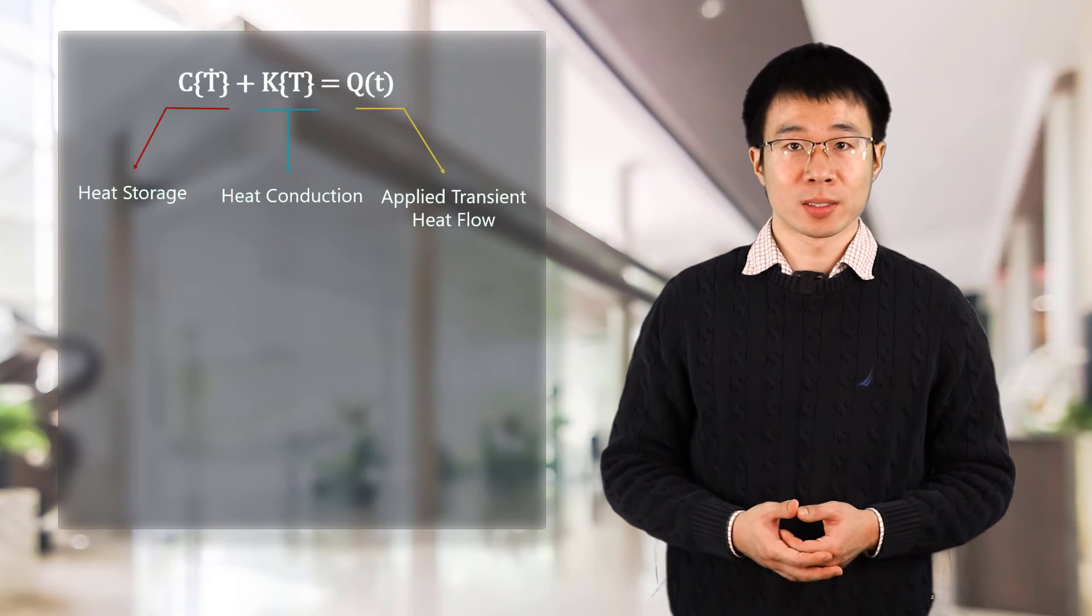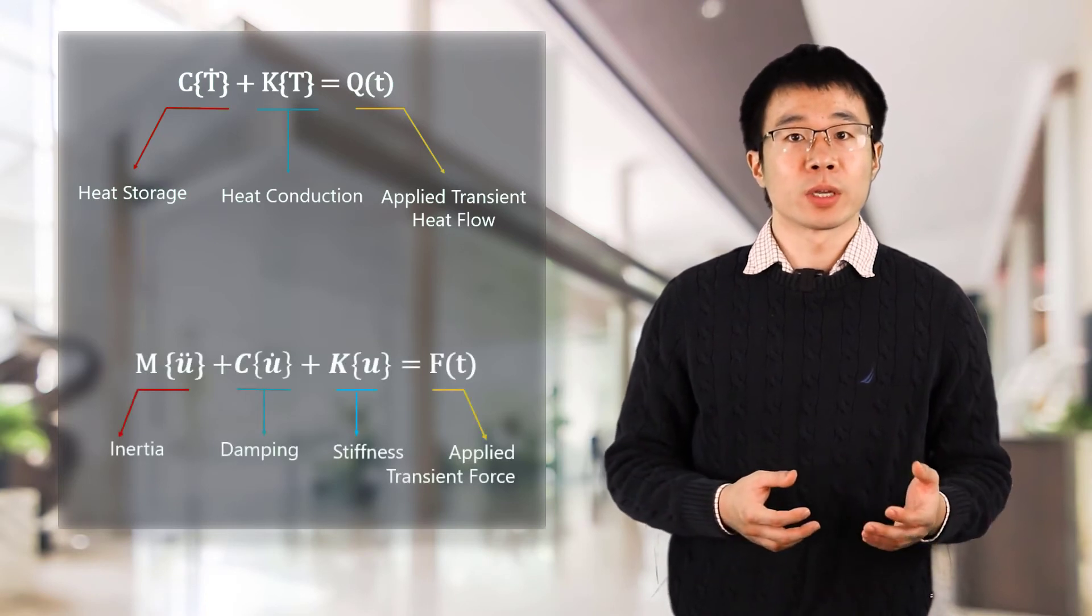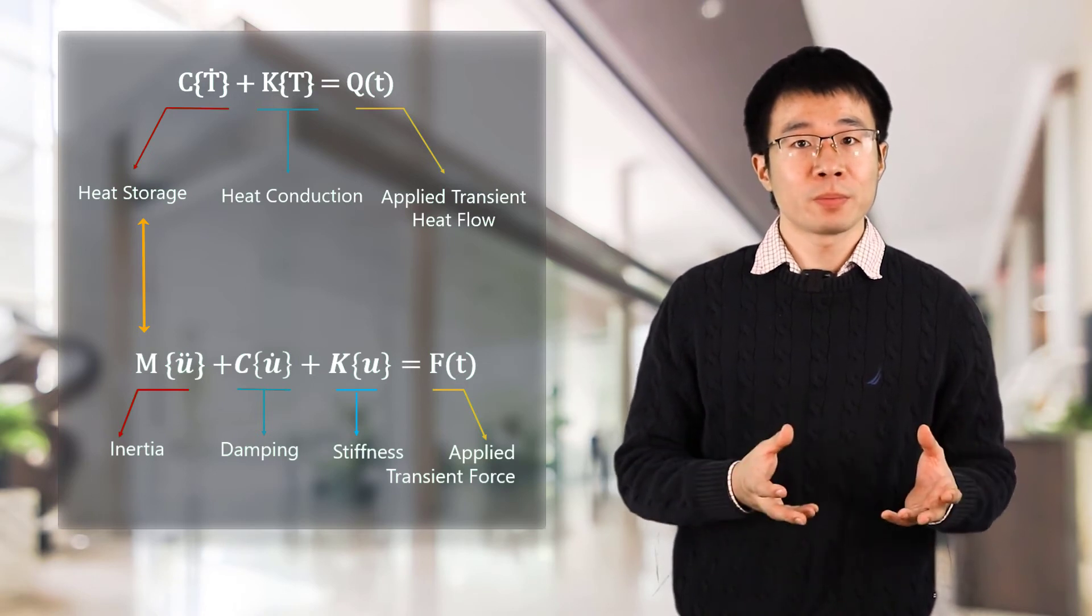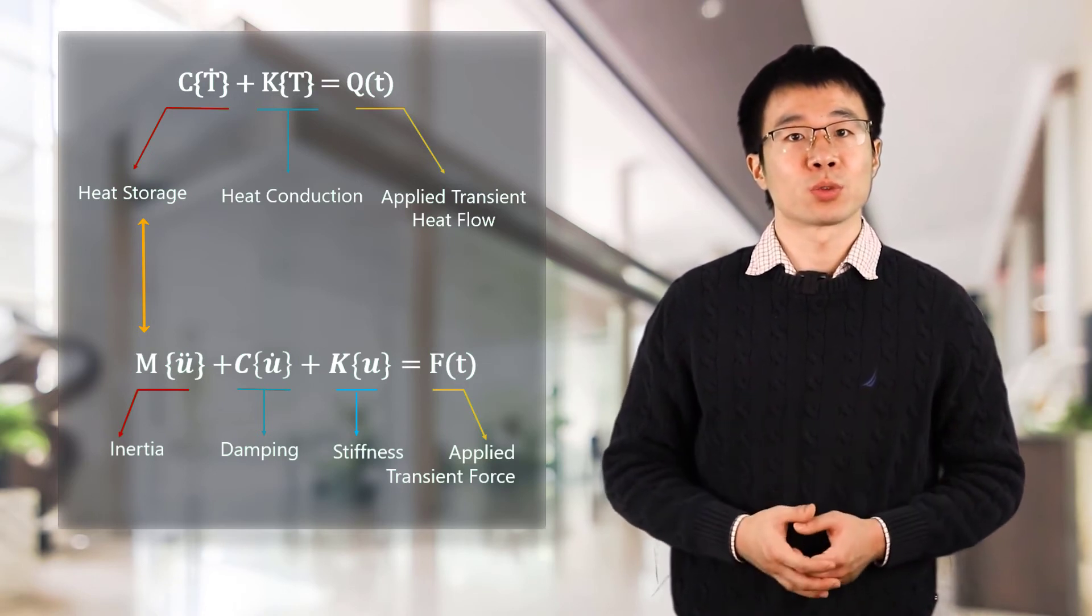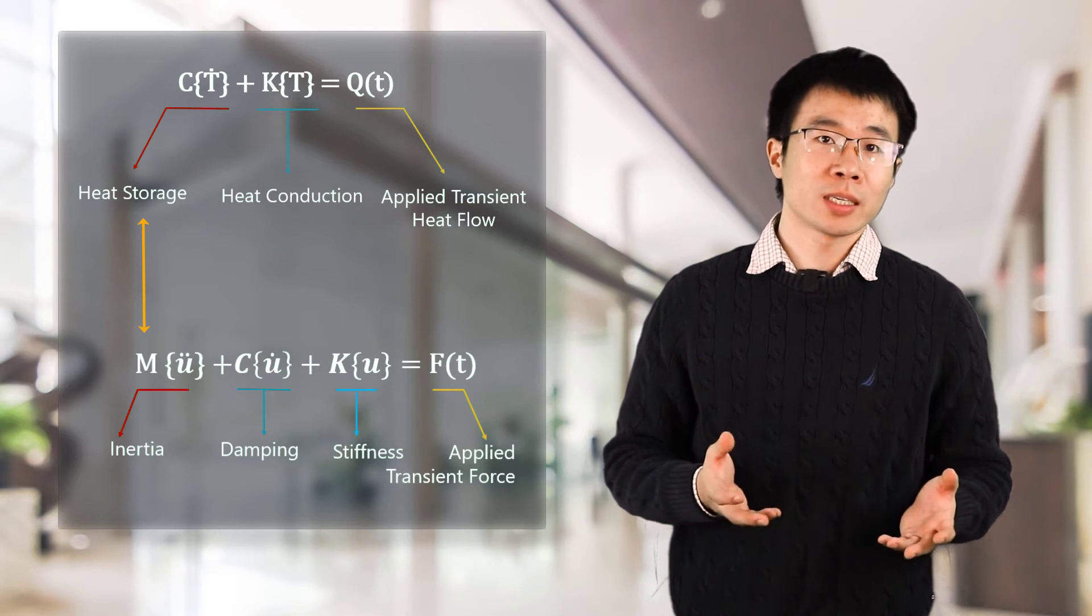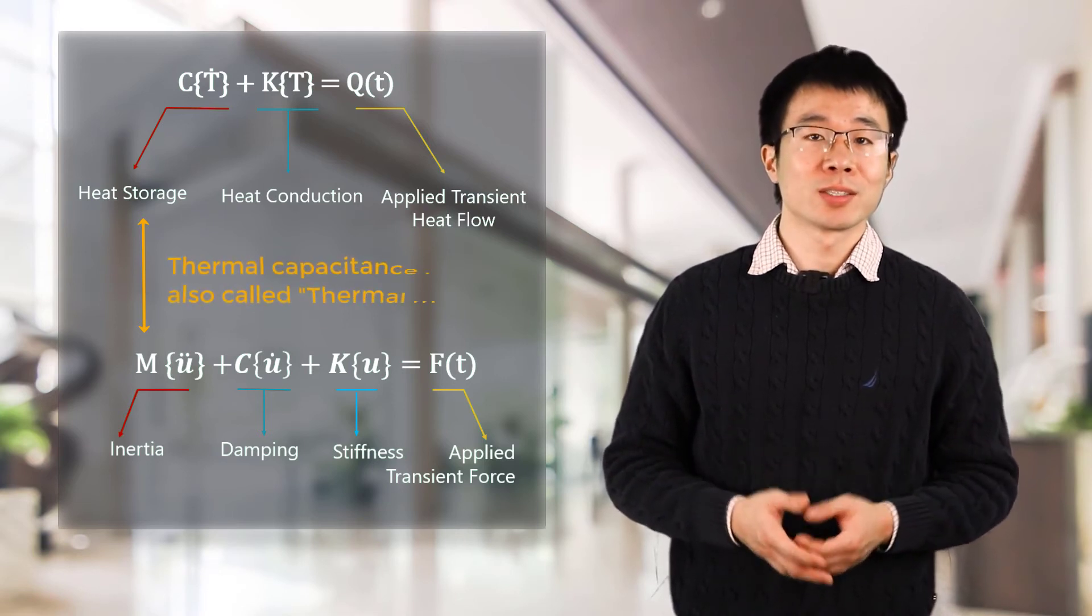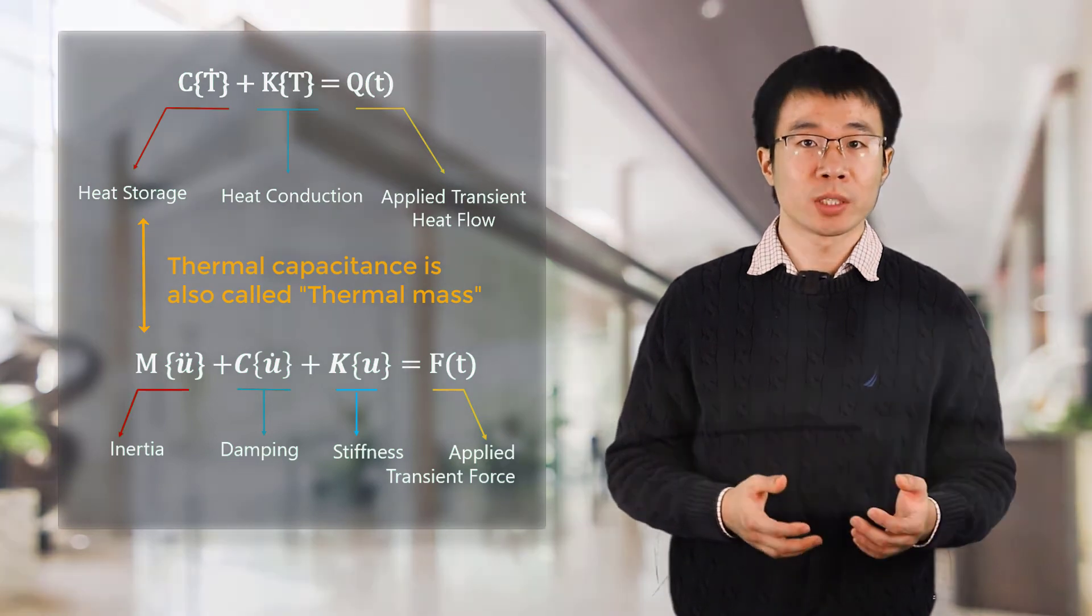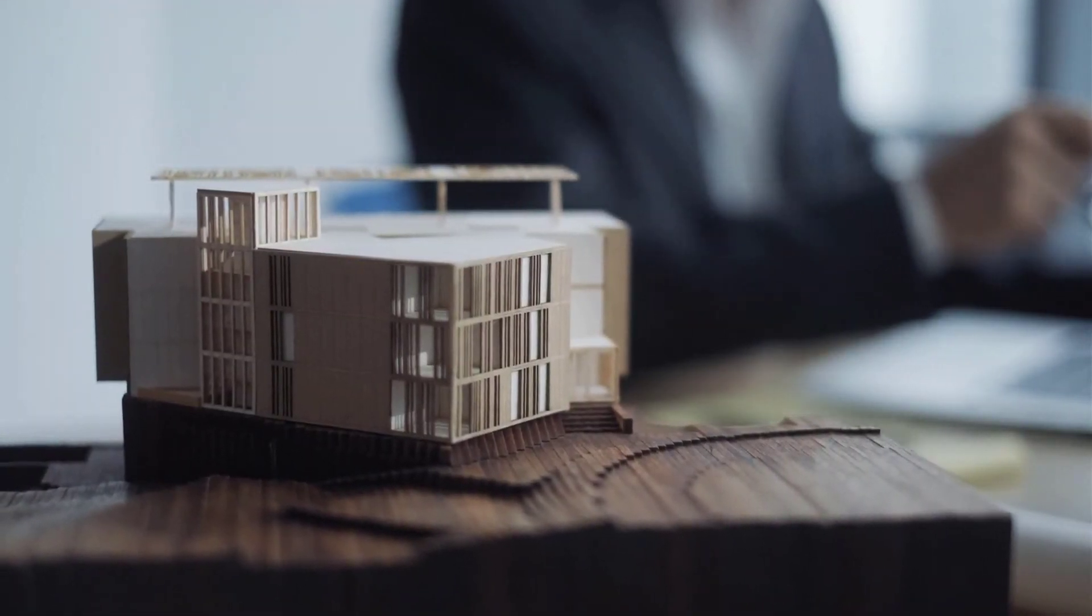A body with larger thermal capacitance will take more time to heat. This is analogous to the inertia of a structure seen in structural analysis. A body with larger mass offers larger resistance to motion. Because of this analogy, thermal capacitance is also called thermal mass. The concept of thermal mass is used in building designs to improve the comfortability of the place by reducing the temperature fluctuations.